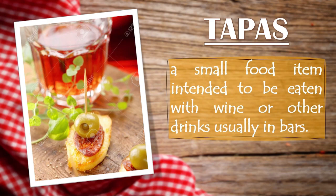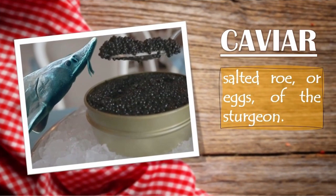Next is caviar — the salted roe or eggs of the sturgeon. Sturgeons are killed in the process of harvesting their eggs. For the sturgeon to fully create mature eggs ready for harvesting, it would take more than five years, depending on the species and how they are treated on the farm. Caviar can be used as a topping or garnish, but it can also be the appetizer itself.